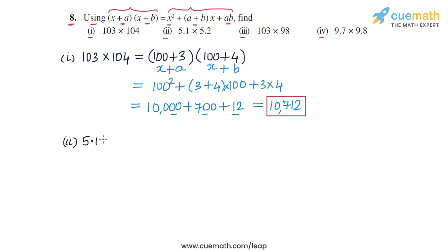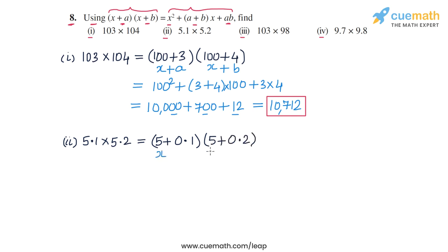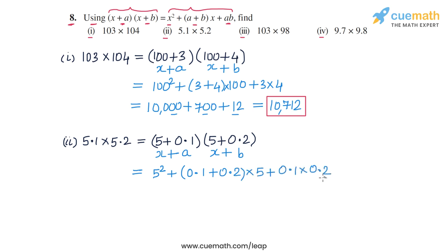Now for part 2, we calculate 5.1 × 5.2. We write 5.1 as 5 + 0.1 and 5.2 as 5 + 0.2. This resembles (x + a)(x + b) where x = 5, a = 0.1, and b = 0.2. Applying the identity gives us 5² + (0.1 + 0.2) × 5 + 0.1 × 0.2.